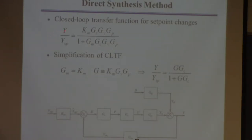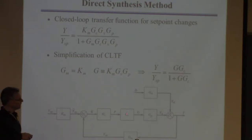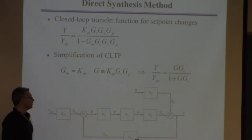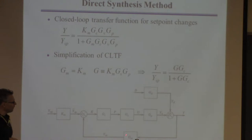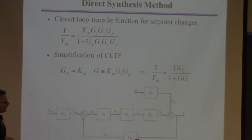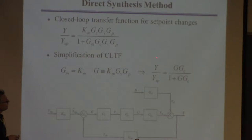Typically we have a transfer function that involves all these different elements. The point is: if you're in a plant, you can't tell the dynamics of the valve, the process, and the measurement apart from each other. You send a signal from the computer to the process, and out comes a measurement. You can't easily isolate the dynamics of the valve or the measurement device. So the way to think about it is: let's just call this whole thing the process — from here to here — because we can't tell the valve apart from the process, apart from the sensor.